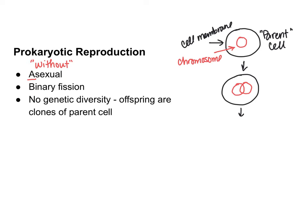Next, the cell membrane is going to start to elongate, and those two copies of the chromosome are going to start to move away from each other. These chromosomes are actually attached to the cell membrane, so as the cell membrane elongates, it is actually pulling those chromosomes apart.